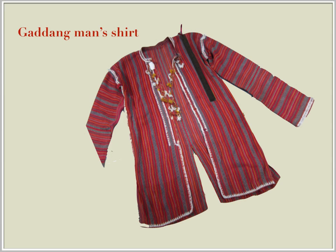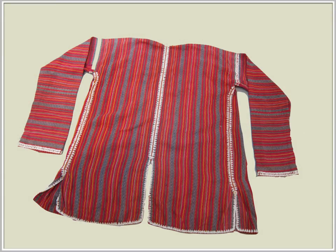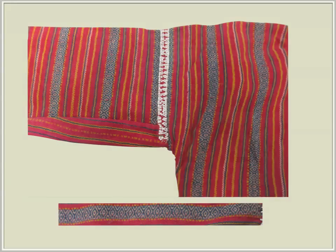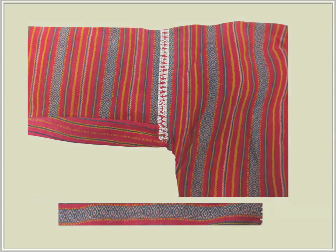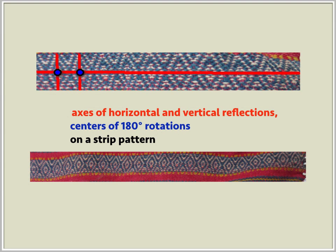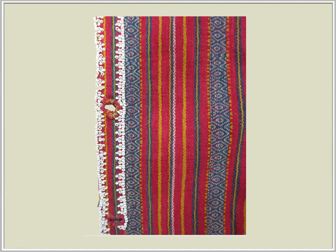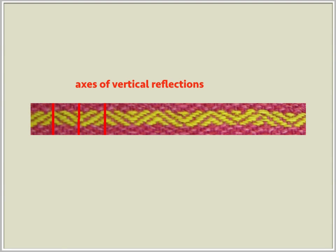A very interesting feature of this Gadang shirt is that the design of the front, the back, as well as the sleeves is a combination of strip patterns from different symmetry classes. The strip pattern with diamond-like motifs has vertical as well as horizontal reflectional symmetry and 180-degree rotations with centers where the axes of reflections meet. The thinner strips, such as those colored yellow or white-blue-yellow, appear like parallel lines from a distance, but looking closely, these are strip patterns that have reflectional symmetries with vertical axes as shown.